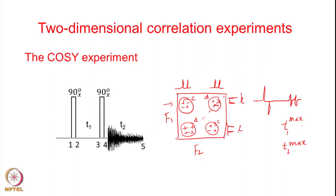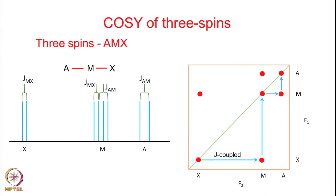Now we also started looking at the 3-spin system, and the general discussion from the 2-spin system is also valid for the 3-spin system. The 3-spin system can be of a particular nature called a linear 3-spin system - the AMX system - where A is coupled to M and M is coupled to X, but there is no direct coupling between A and X. Each of these spins will have different multiplicity: the X spin is split by coupling to M, the M spin is split by coupling to both X and A, producing a doublet of doublets, and the A spin will be a doublet showing the AM coupling constant.